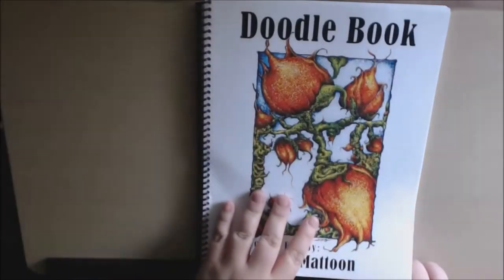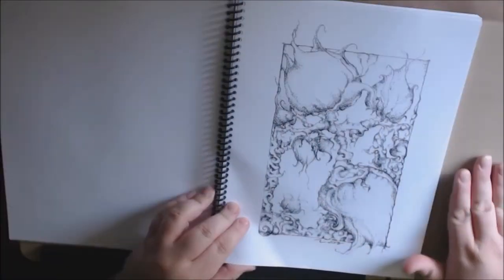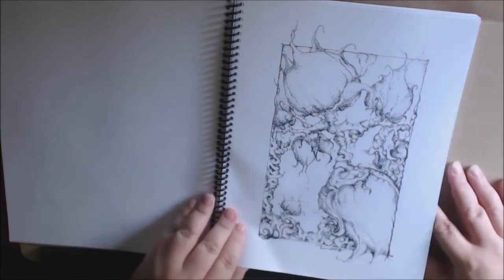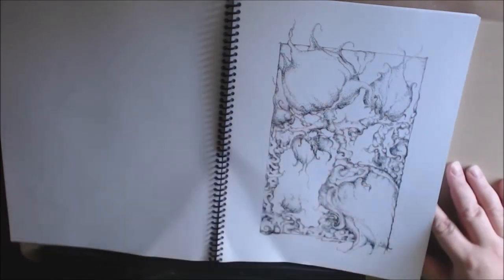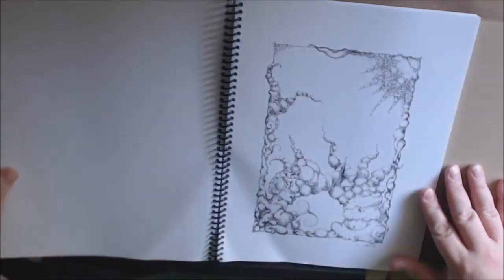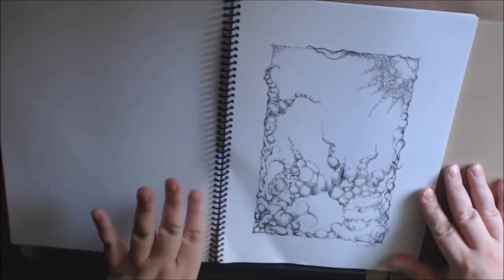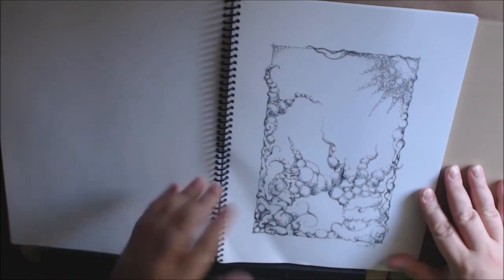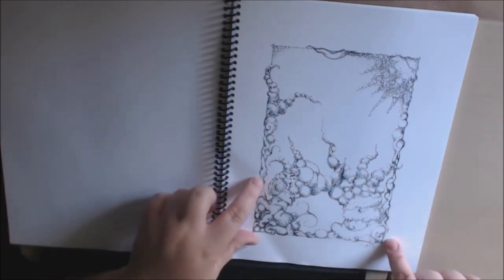This book is very abstract. Like this page, I see flowers. You may see something different. It's kind of like when you're looking at clouds, you see different things that maybe somebody else doesn't see. But I do like how it just looks like it's all created out of little dots.